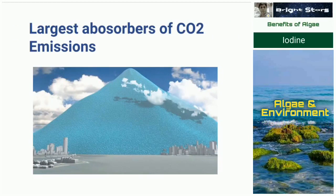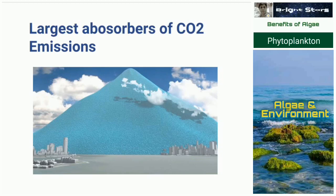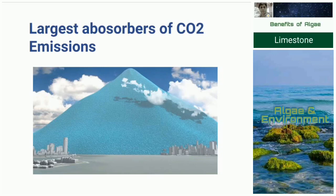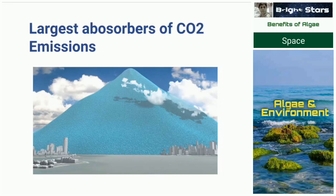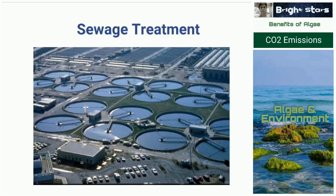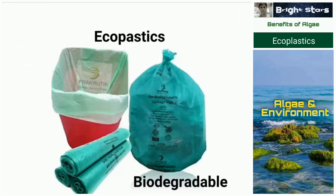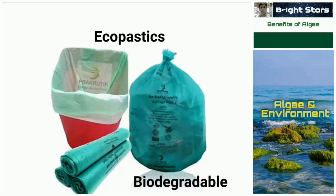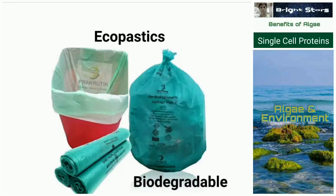Algae are also the largest absorbers of carbon dioxide emissions. If a volcano erupts or carbon dioxide is emitted by plants, animals, vehicles, or factories, these emissions are absorbed by algae and further converted into food for living creatures. They are also very useful in sewage treatment and wastewater treatment plants. From algae we can also produce eco-plastics — biodegradable plastics that can be decomposed or degraded by microorganisms.